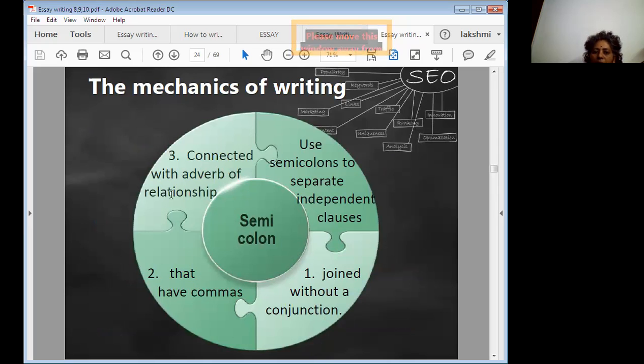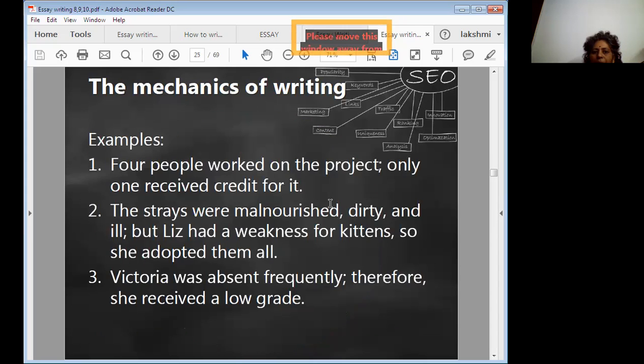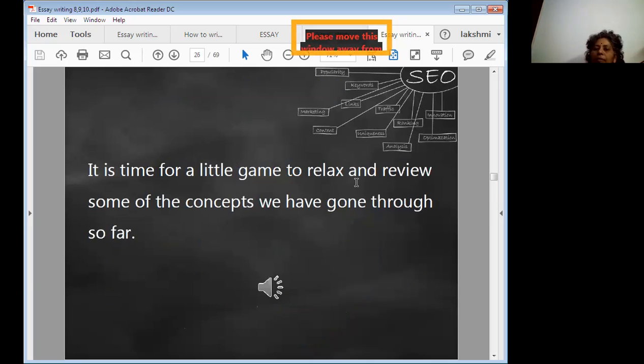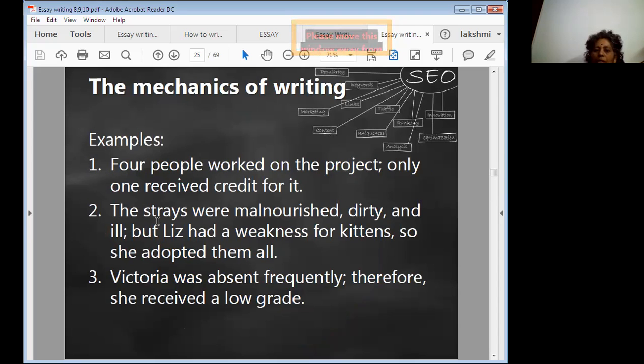Here, the first one is joined without a conjunction, semicolon usage. Next, connected with the adverb relationship. Use semicolons to separate independent clauses. The next two examples: 'Four people worked on the project; only one received credit for it.'